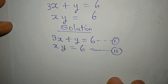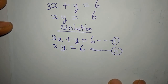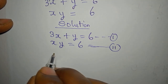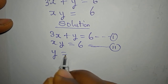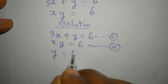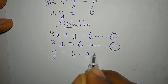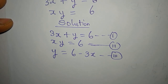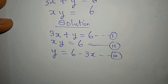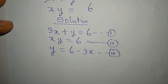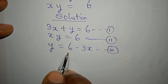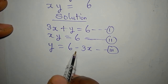From equation 1, I can make y the subject, so y will be equal to 6 minus 3x, and we call this our equation 3. Mind you, we are going to need this equation 3 as time goes on.